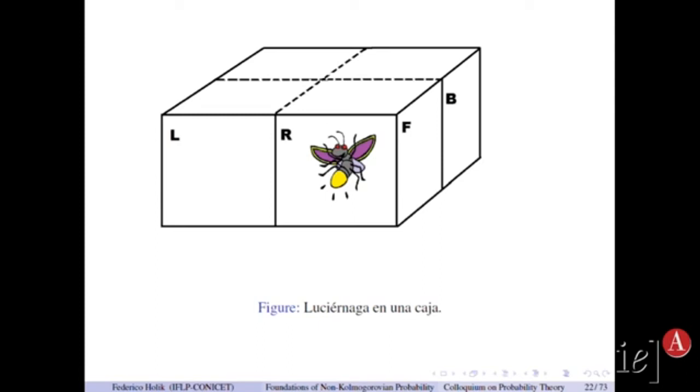And you can do only two experiments. Either you look at the box from this side and you check whether the firefly is detected on the left or on the right. And if you choose this, you are not allowed to see what happened in the back. Or either you choose this experiment and you check whether the firefly is detected front or bottom. So there are two complementary experiments that cannot be performed at the same time.